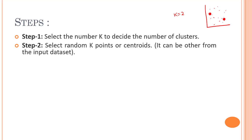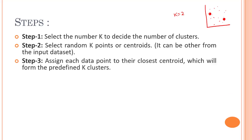The third step is to assign each and every point to the closest centroid, which will form our predefined k clusters. We calculate the distance using Euclidean distance. We've already seen Euclidean distance and Manhattan distance in previous videos, but for k-means we use Euclidean distance to calculate the nearest distances. Sometimes Euclidean distance might not be the best fit, but as a starting point, it is absolutely the best one to use.